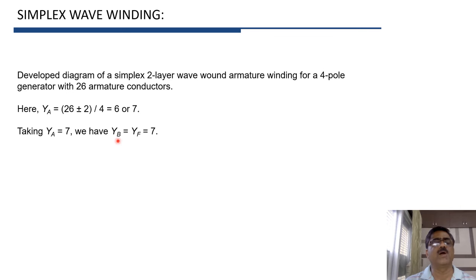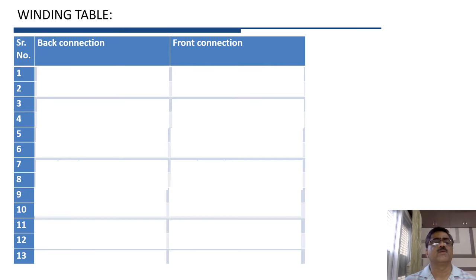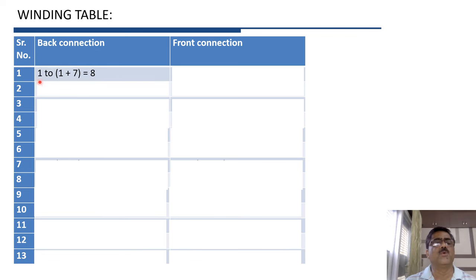Back pitch YB and front pitch YF are both equal to 7. The front side is the commutator end and back side is the other end. Starting from conductor 1: on the back side, conductor 1 is connected to 1 + 7 = 8. Then on the front side, conductor 8 is connected to 8 + 7 = 15. Then 15 is connected to 22.